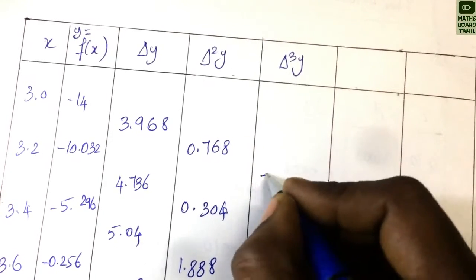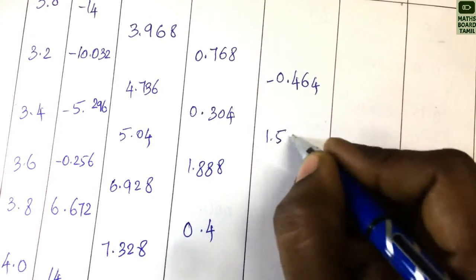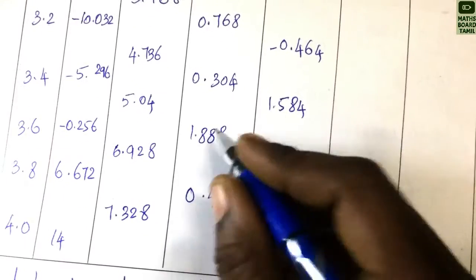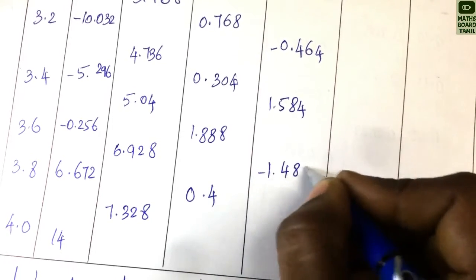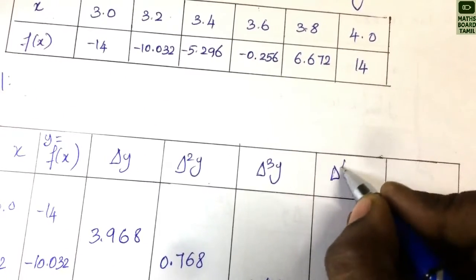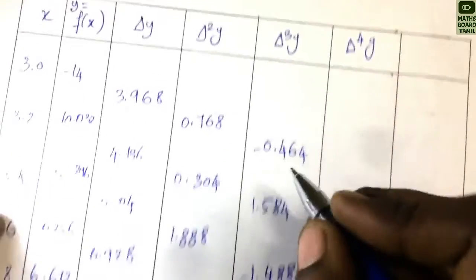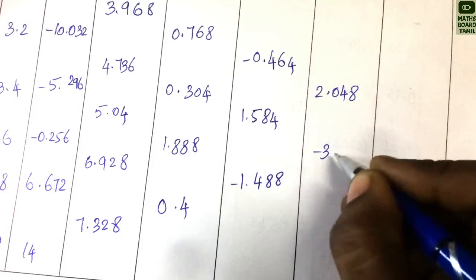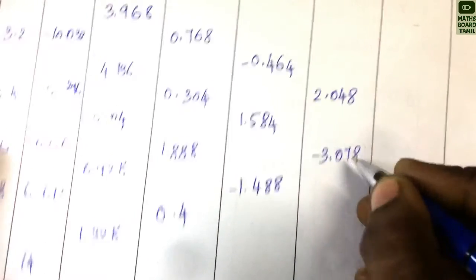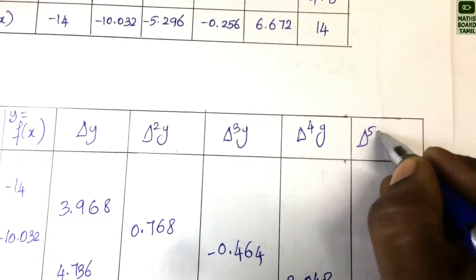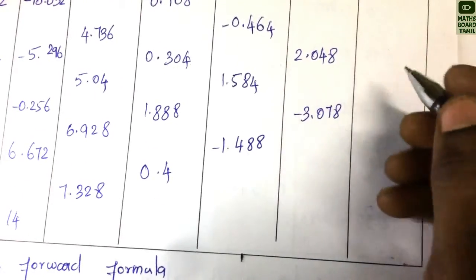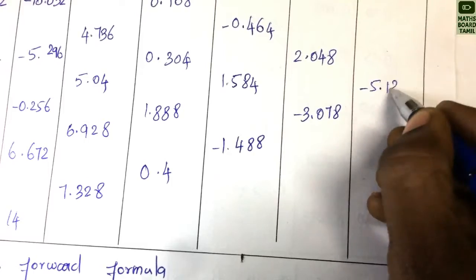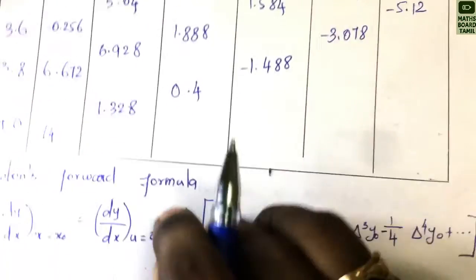For the second differences Δ²y, we get: 0.768, 0.304, then for Δ³y: 0.464, 1.584, 0.488. For Δ⁴y: 2.048, 2.048. For Δ⁵y: −5.12. We add these differences column by column.